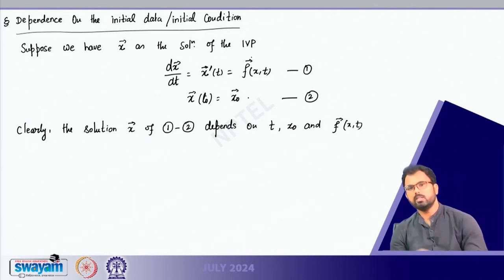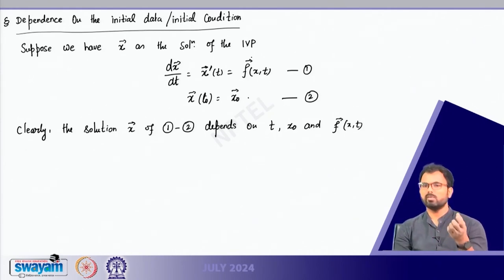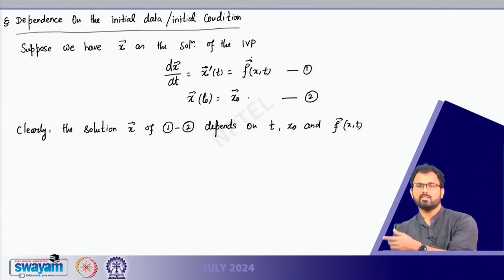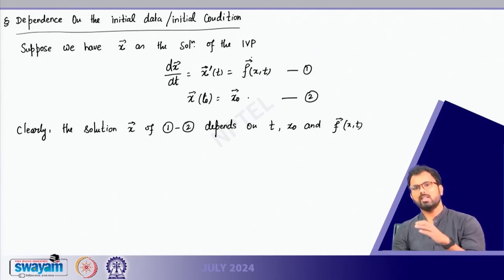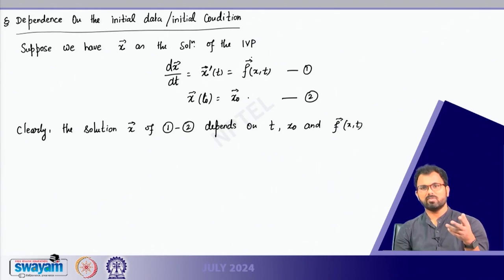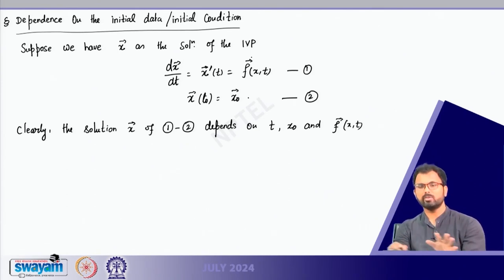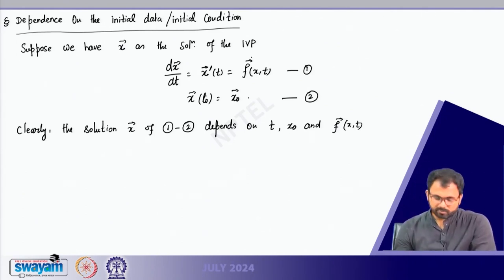If you integrate both sides of equation 1 from t₀ to t, you get x(t) minus x(t₀) on the left, and the integral from t₀ to t of f(x, s) ds on the right. So when you write x(t), bringing x₀ to the right-hand side, x becomes a function of t, depends on x₀, and also depends on f. Those observations can be made very easily just by looking at the equation itself.